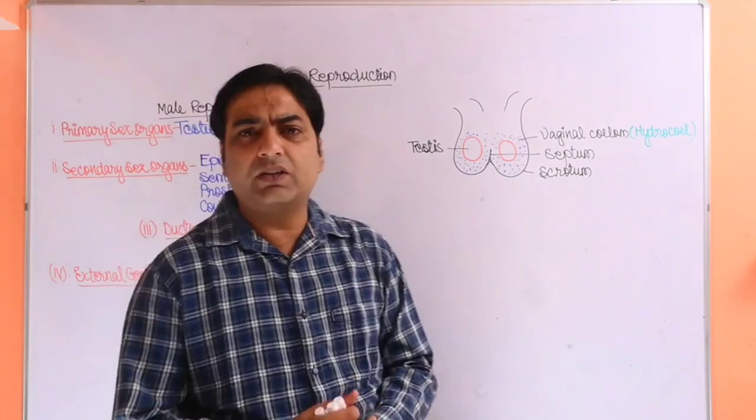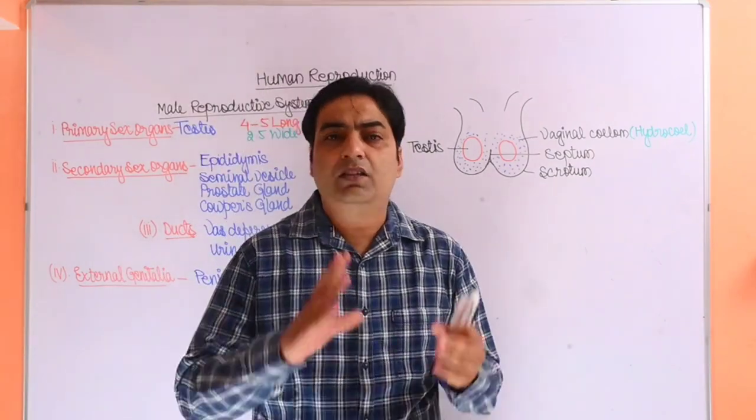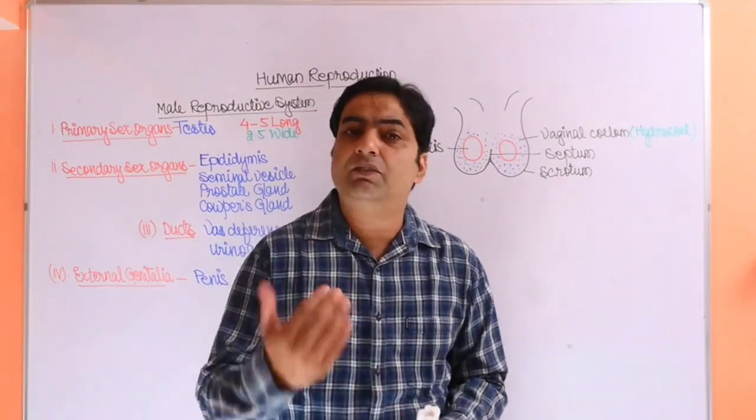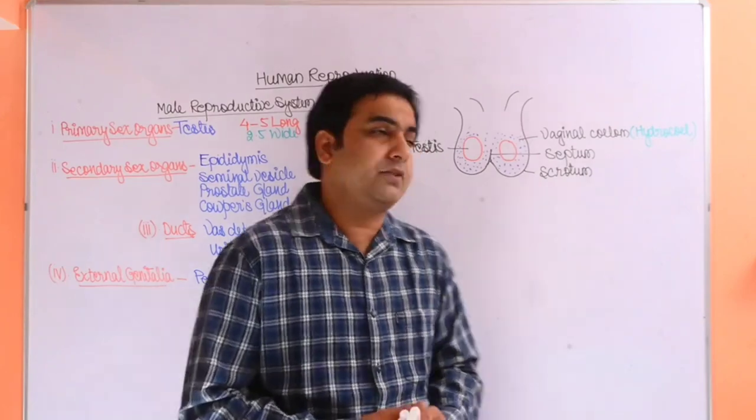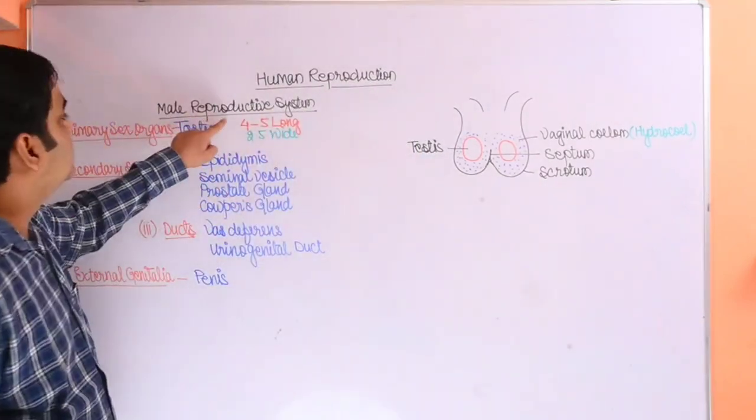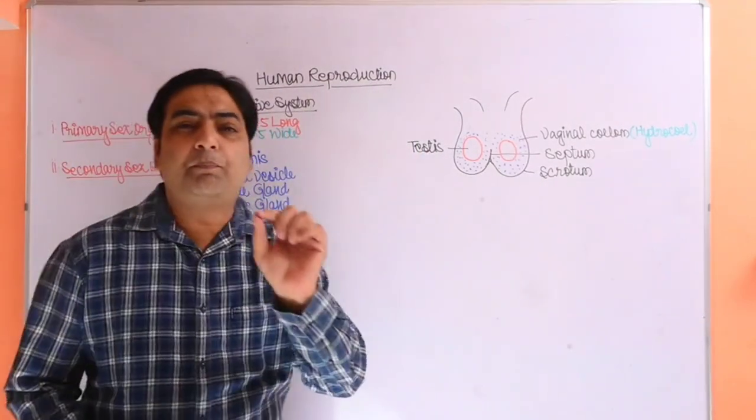This is one of the most important chapters and economically very good chapter because so many questions have been taken from this single chapter. It will be really beneficial to everyone of 12th standard, those who are going to participate in boards. Let us start with the male reproductive system first, then we will talk about female reproductive system. Male reproductive system is made up of primary organs.